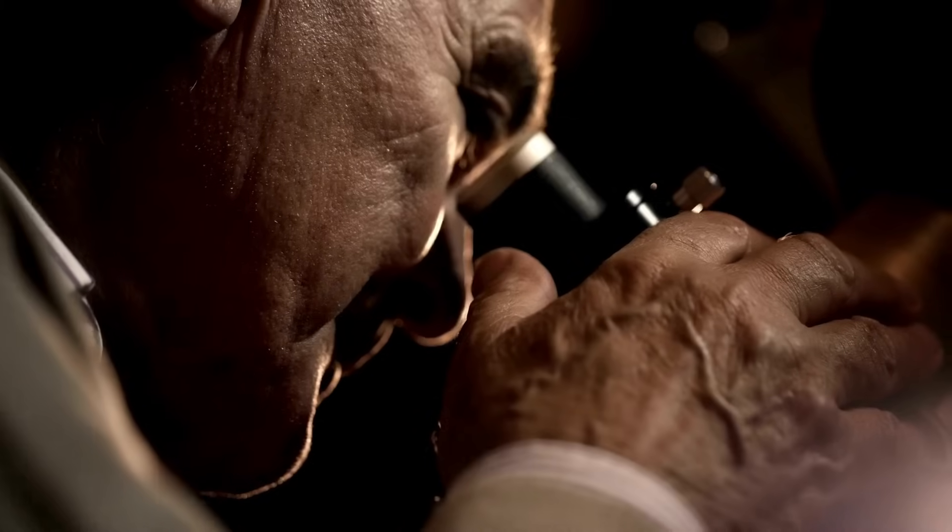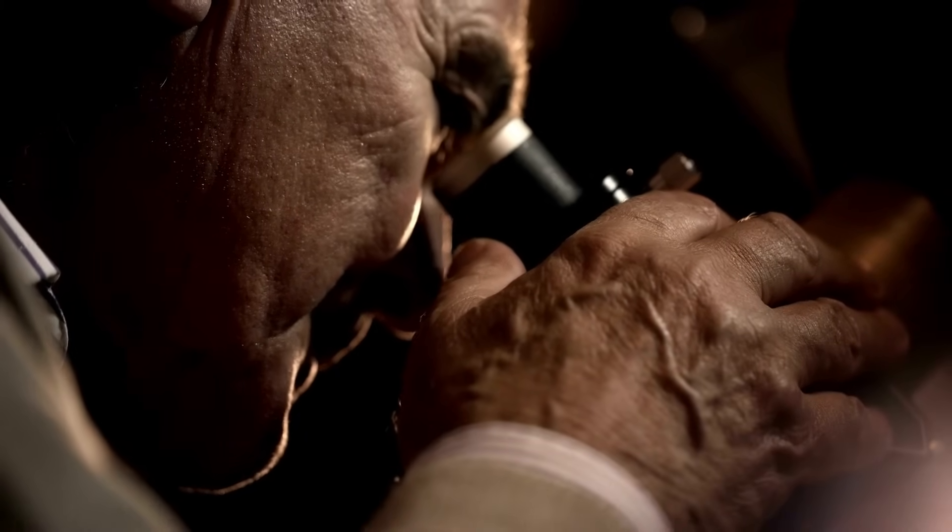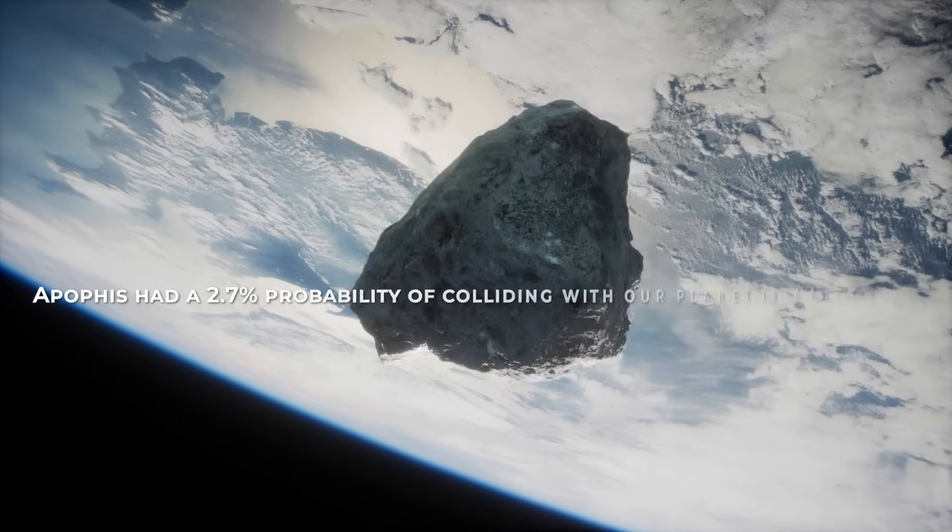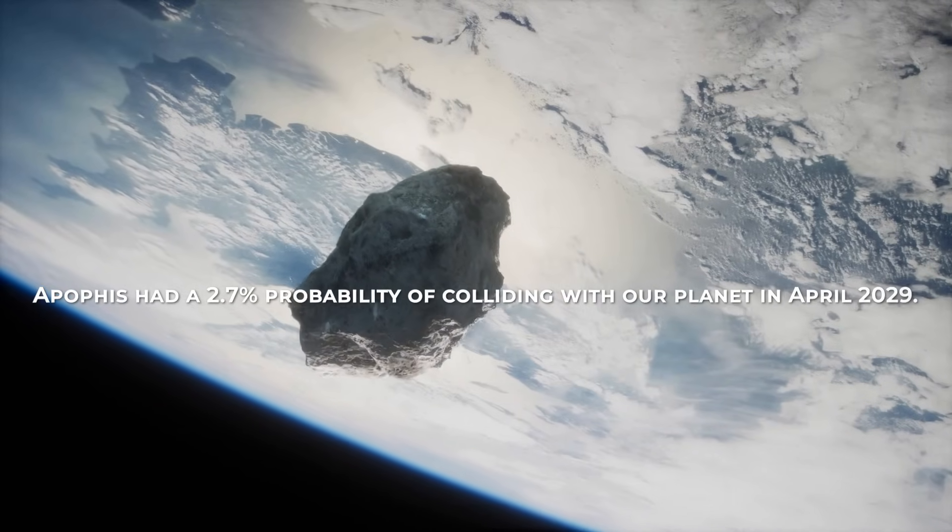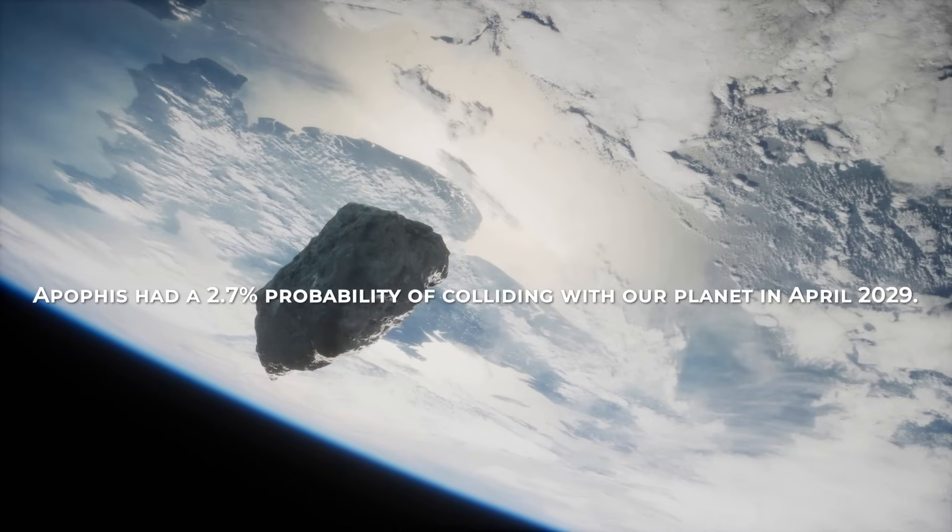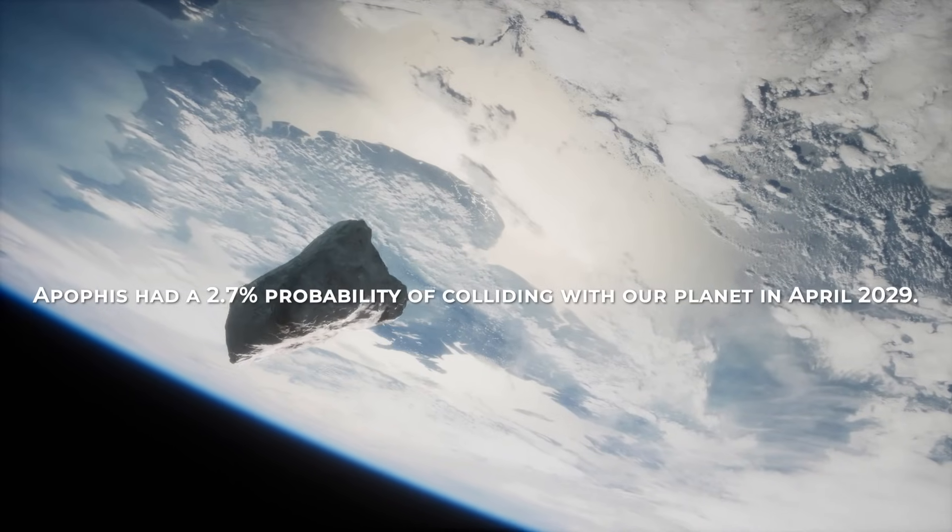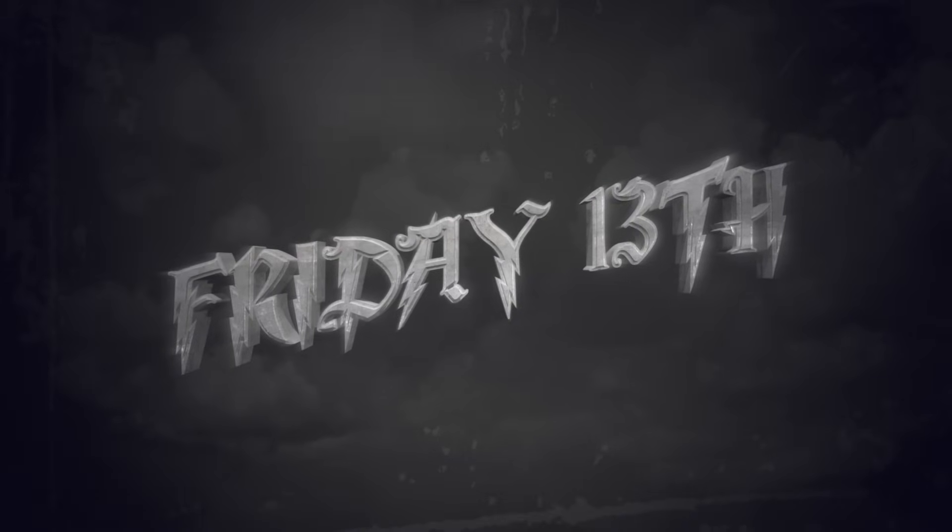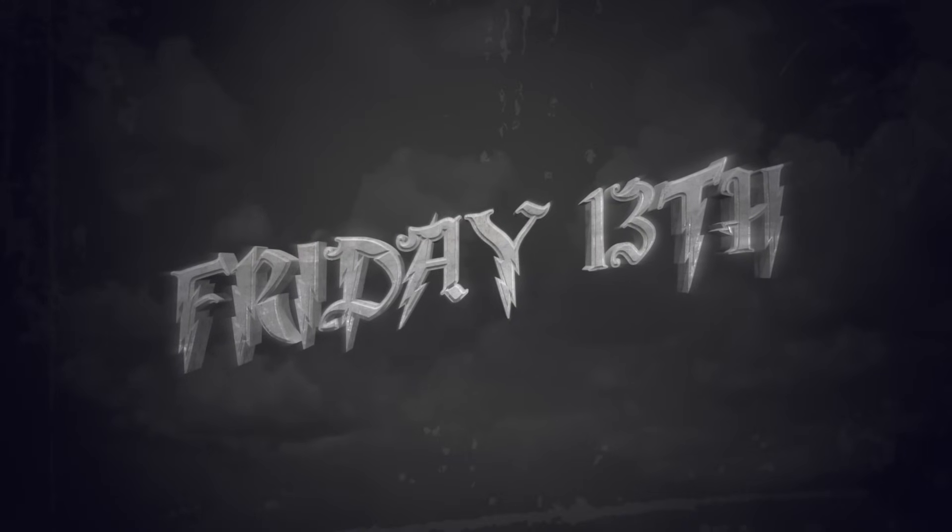As data began to accumulate, scientists were able to make a rough estimation of its future trajectory. To their alarm, they discovered that Apophis had a 2.7% probability of colliding with our planet in April of 2029, a date that coincidentally fell on the notoriously unlucky Friday the 13th.